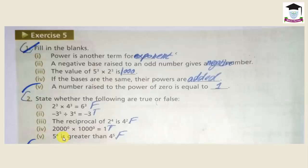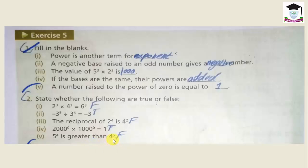Fifth statement: 5 power 4 is greater than 4 power 5. This is false. When we calculate, 4 power 5 gives a greater answer than 5 power 4, so the statement is false.